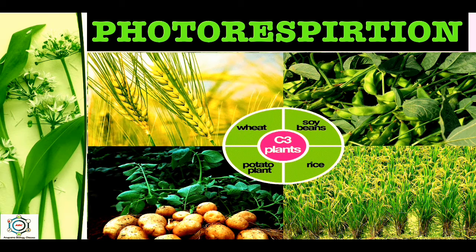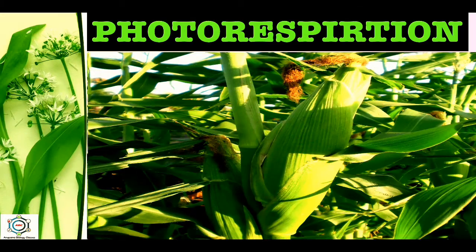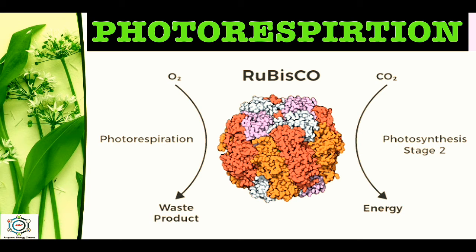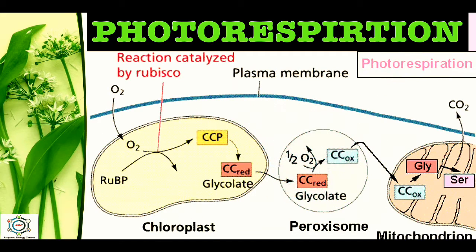The inhibition was observed mostly in C3 plants — wheat, soybeans, rice, potato plants etc. The C4 plants were hardly affected by varying oxygen concentrations. Extensive studies were carried out to explain the Warburg effect, leading to the discovery of Photorespiration. The process was first demonstrated in tobacco plants by Decker and Teo in 1959.